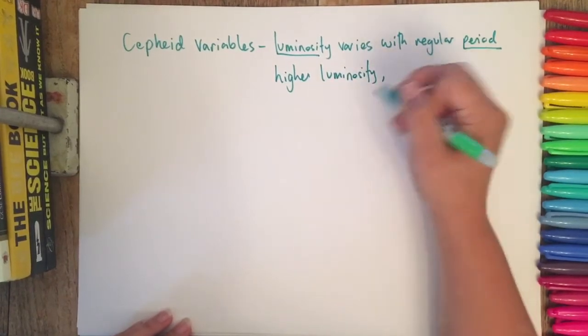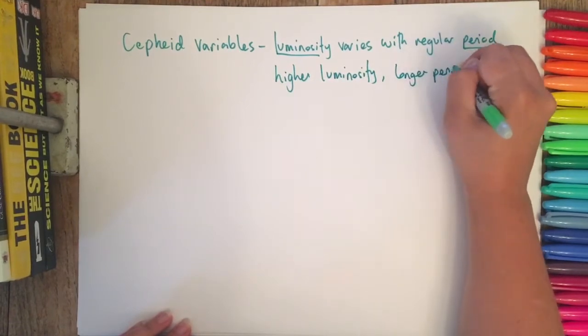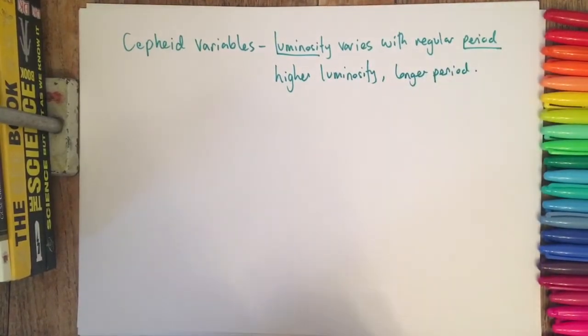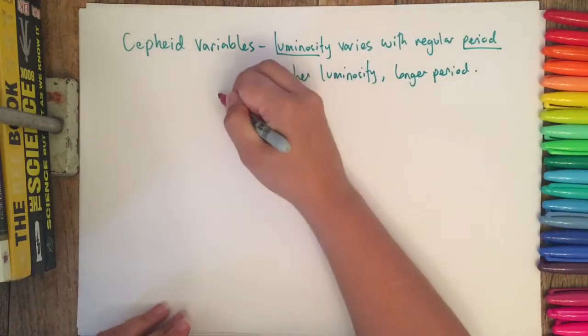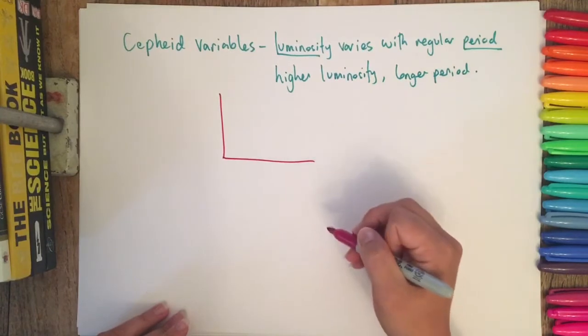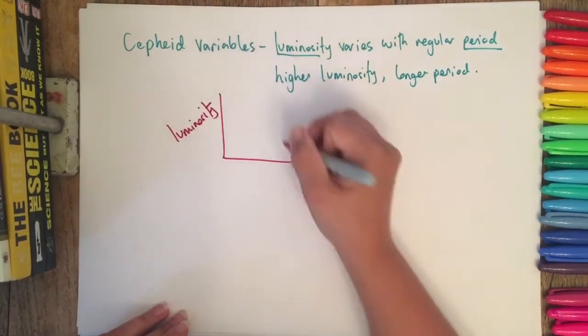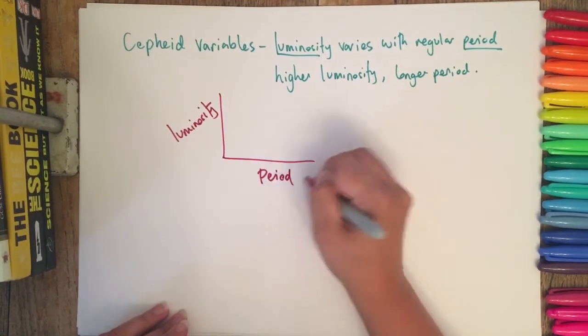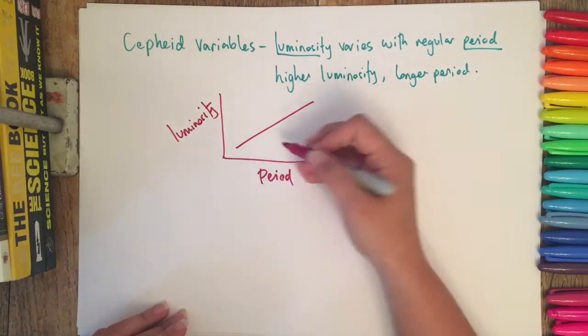...then Henrietta Leavitt, who discovered these, found that they had a longer period. So after doing loads of measurements, she was able to plot a graph with luminosity here and period, usually in days, on the x-axis. She found that they were proportional.